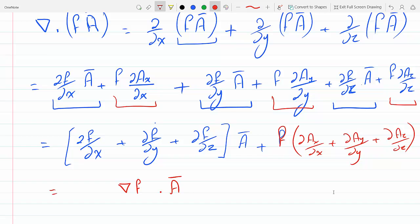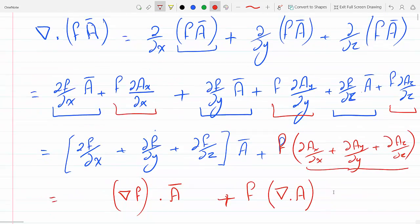And plus now f, and what is this? This is a scalar, and it's partial derivatives of the components. This is just the divergence of A. So f times the divergence of A, and this way I would have proved the above identity.